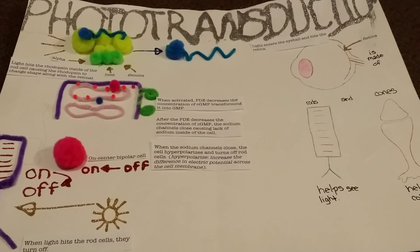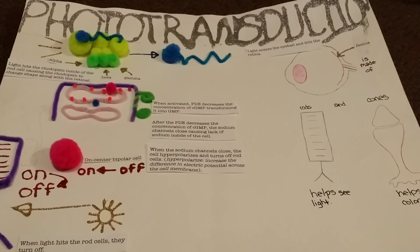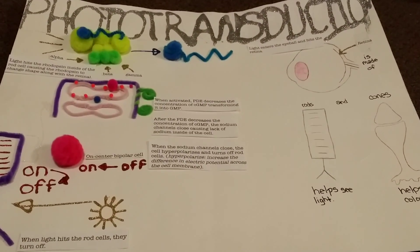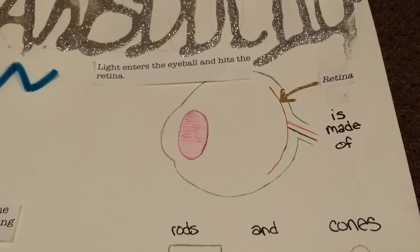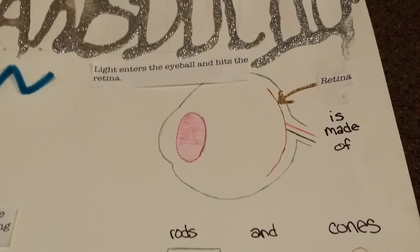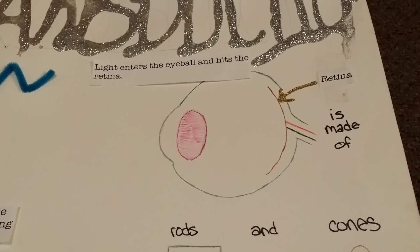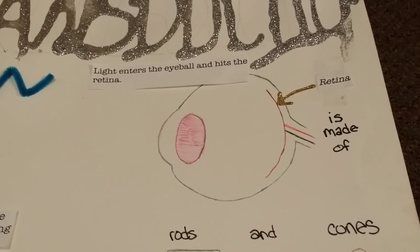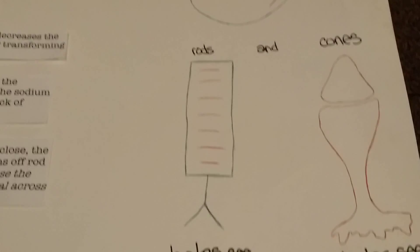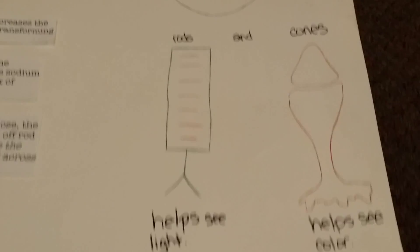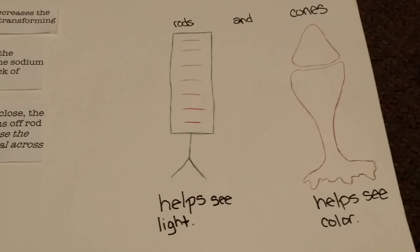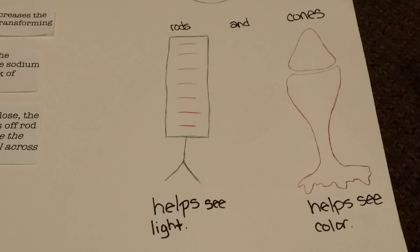We will be discussing phototransduction in the rod cells of the retina. When light enters the eyeball, it hits the retina, which hits the rods and the cones as well. Rods help to see the light, and the cones help to see the color.